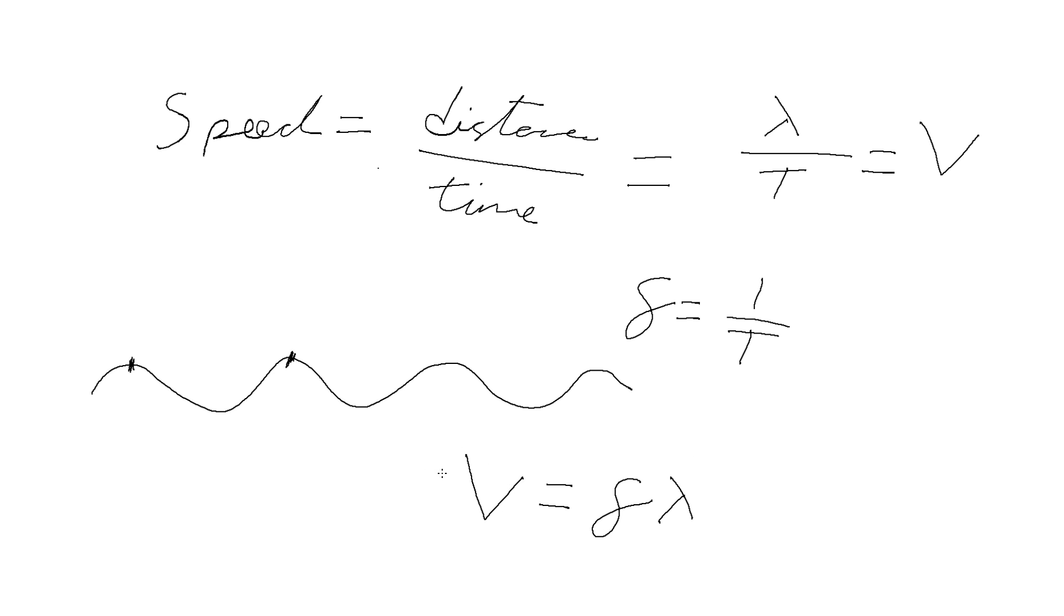Where v is the wave speed in meters per second, lambda is the wavelength in meters, and f is the frequency in seconds to the minus one or equivalently in hertz.